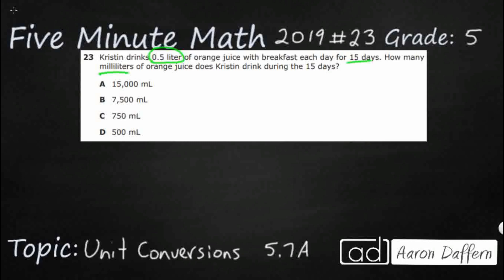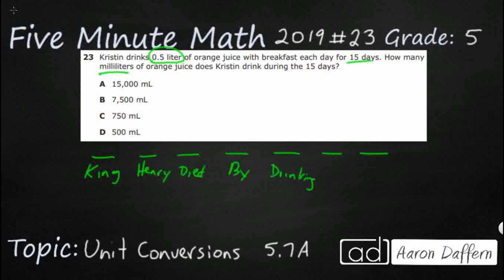When we are converting our metric units, we need to go back to our King Henry — hopefully you've heard this before. King Henry died by drinking chocolate milk. Think of it like 'Please Excuse My Dear Aunt Sally' — it's just a mnemonic that we use. I'll write that right here: King Henry Died By Drinking Chocolate Milk.